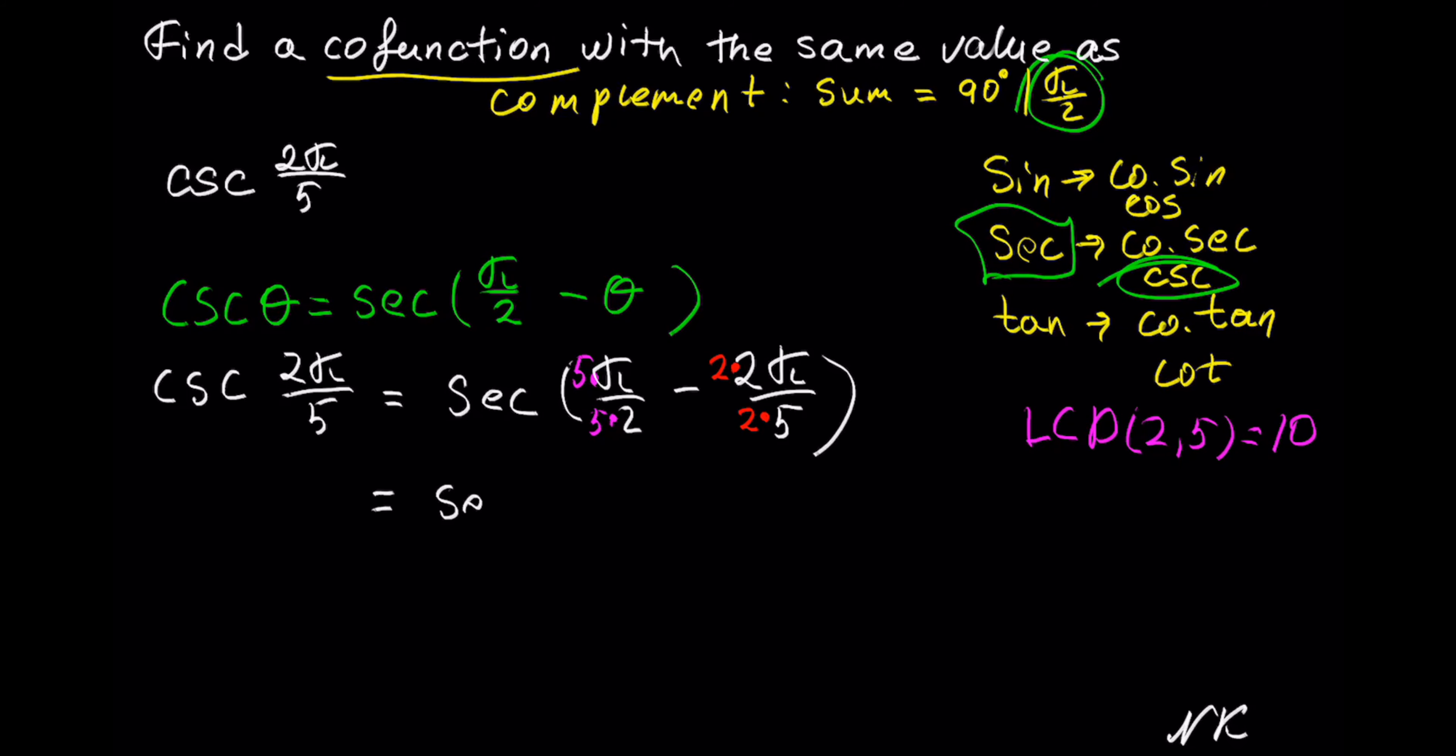This gives us secant of 5π out of 10 minus 2 times 2, which is 4π out of 10.